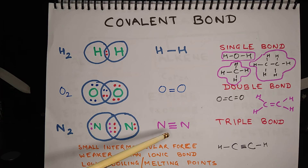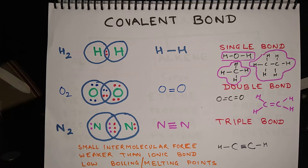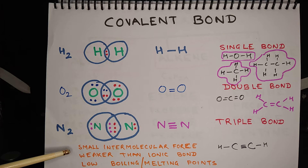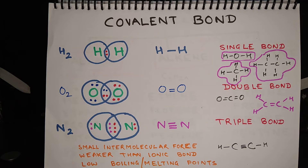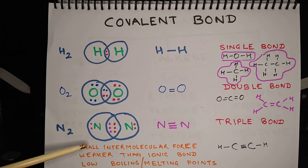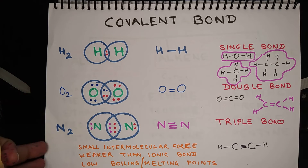Some salient features of covalent compounds are small intermolecular forces — there is a small intermolecular force between the molecules of covalent compounds. Covalent bonds are weaker than ionic bonds because there is no charge involved in the bond. Moreover, covalent compounds have low boiling and melting points because of the weaker force of attraction between the molecules.